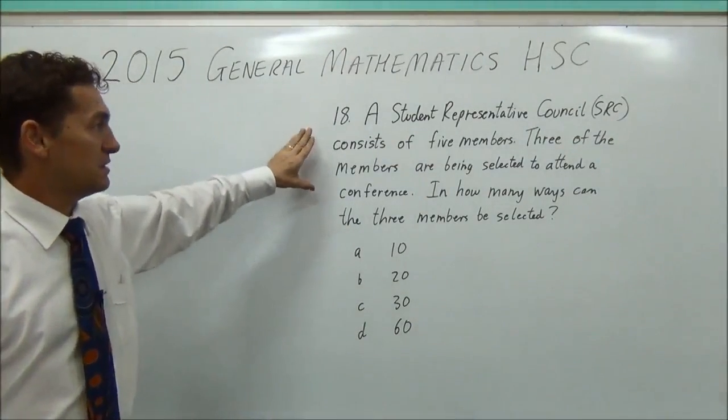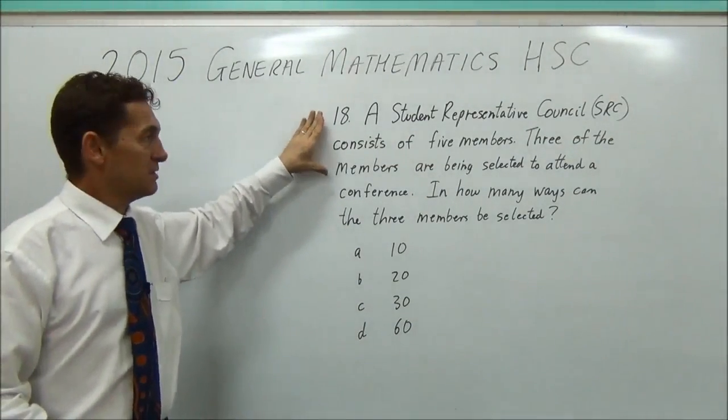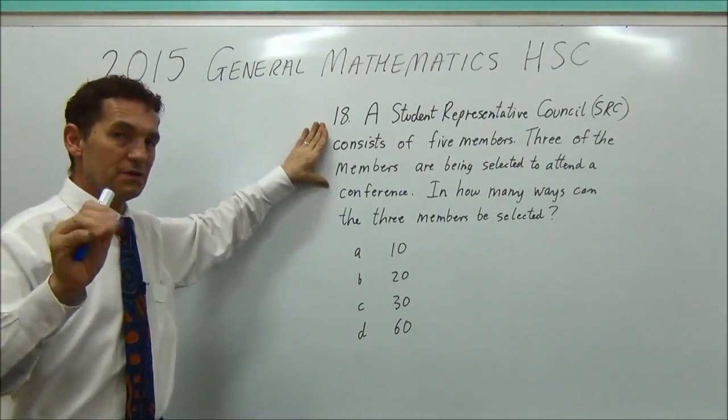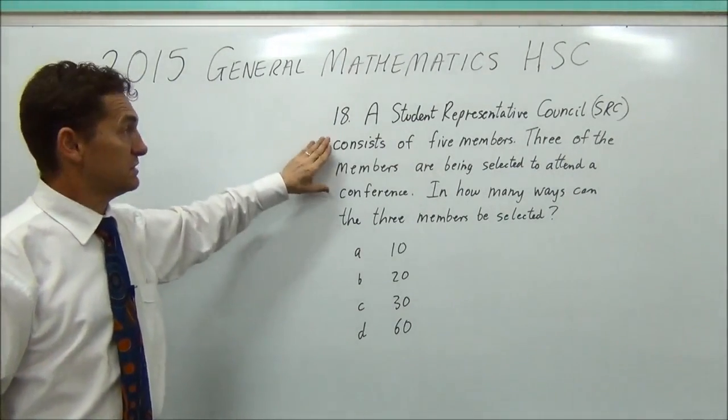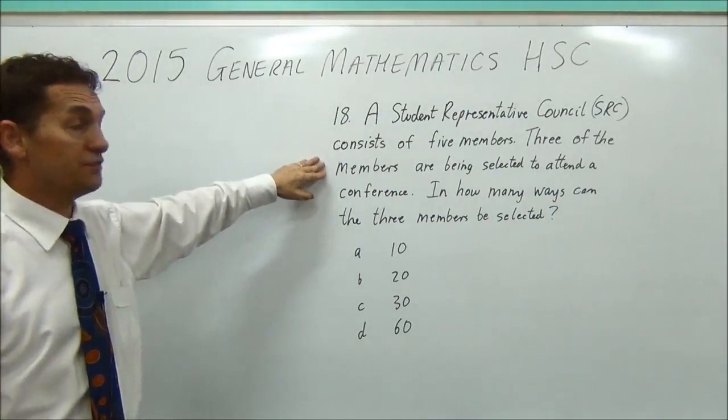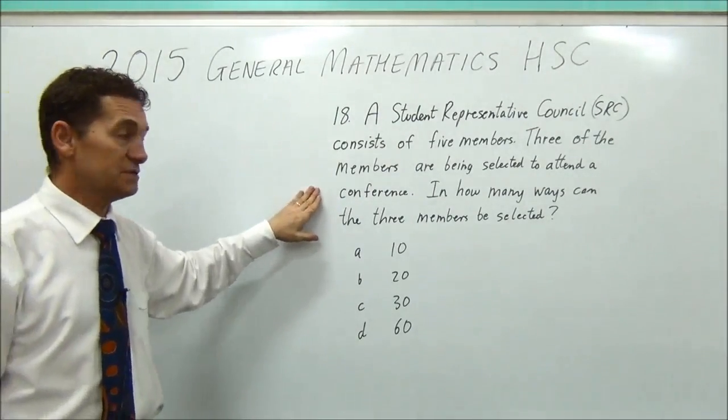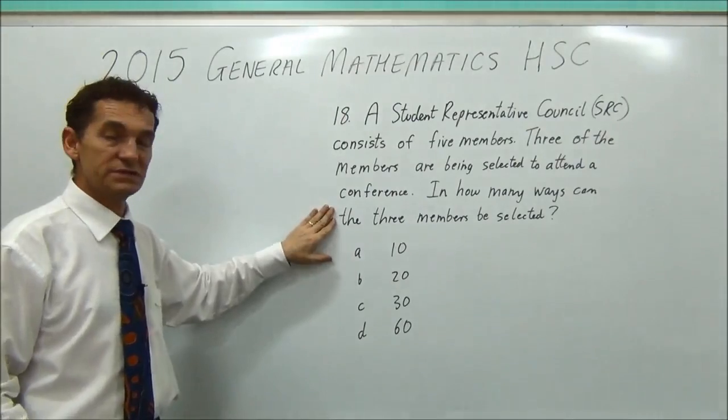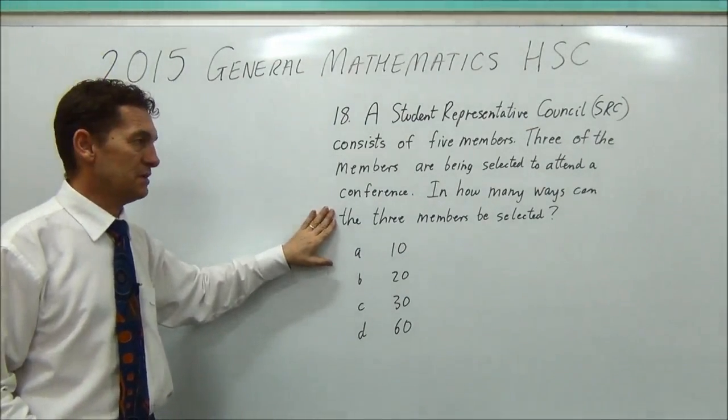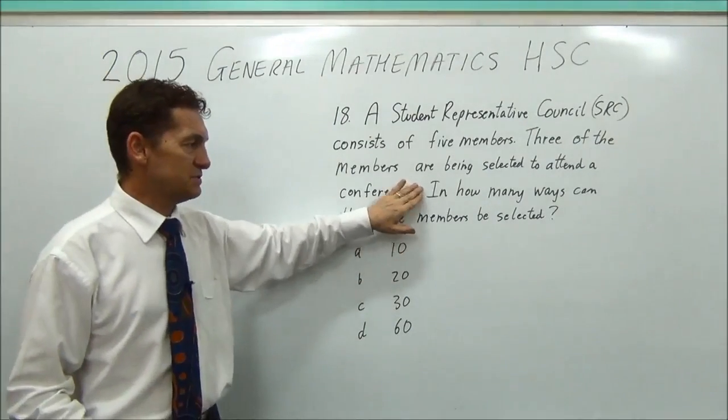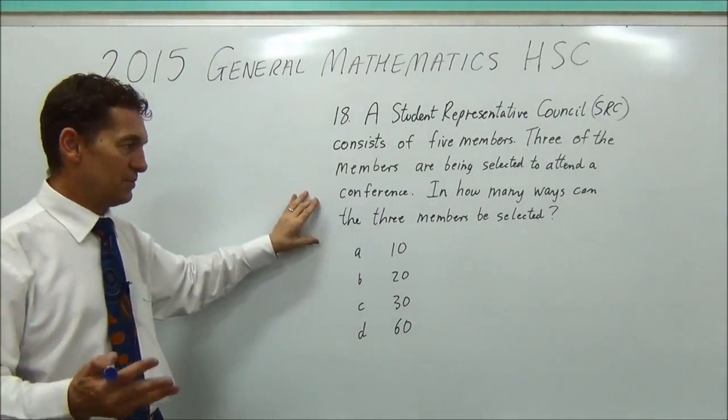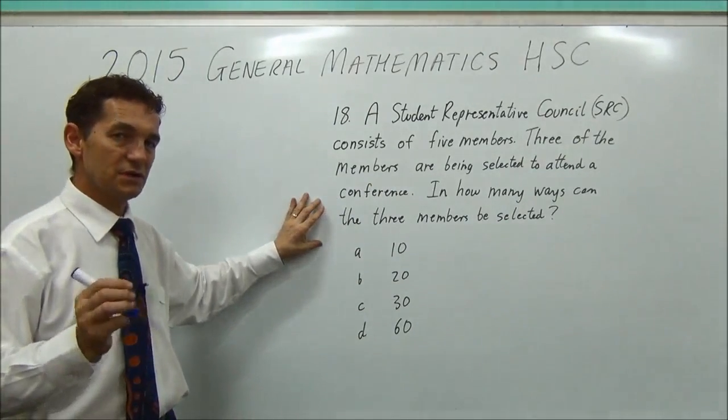G'day again. Question 18. Now when you're getting this far into the paper, the questions start getting a little bit higher level, which this one is. Student representative council consists of five members. Three of the members are being selected to attend a conference. In how many ways can the three members be selected? So this question is a little misleading.